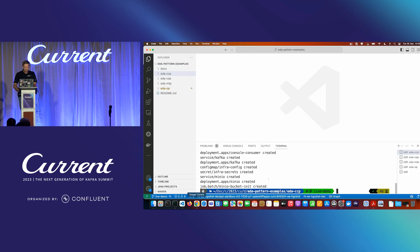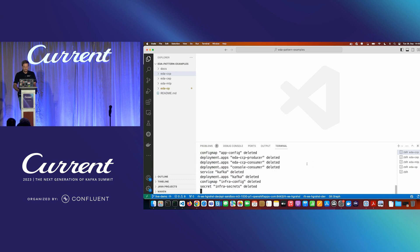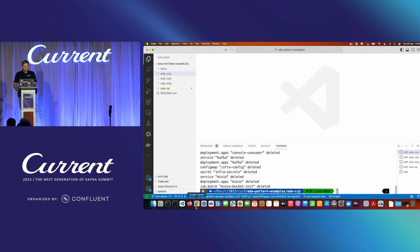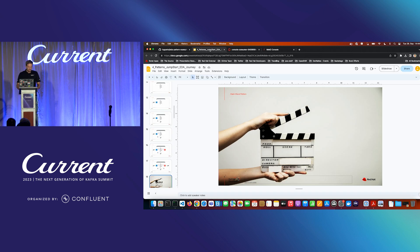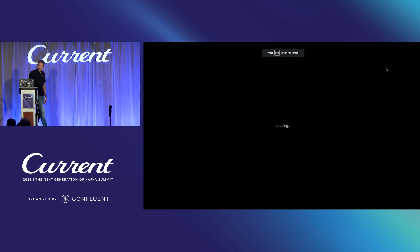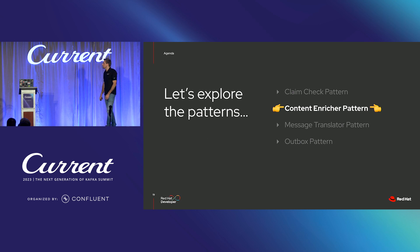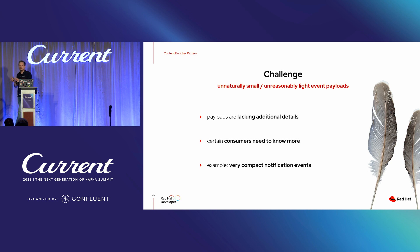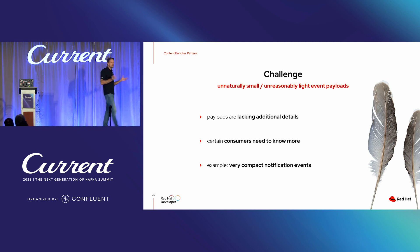Let me destroy that infrastructure so we have a clean namespace for the next pattern. The second pattern is the content enricher pattern, where we face pretty much the opposite challenge of what we just discussed. Sometimes events do not contain enough data for specific consumers — we have unreasonably small payloads lacking additional details, missing contextual information.